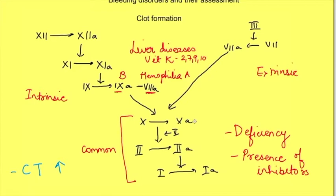Extrinsic and common pathways can be assessed by taking blood and adding tissue thromboplastin to it, then finding out how much time it takes to clot. This is known as prothrombin time. We are adding factor 3, tissue thromboplastin, and activating the extrinsic pathway. If any of these clotting factors - factors 7, 10, 5, 2, 1 - are deficient or inhibited, there will be prolonged prothrombin time.